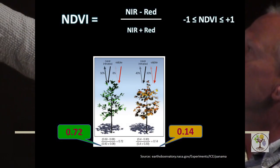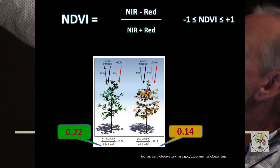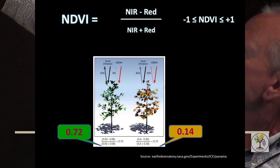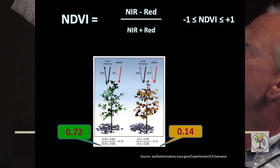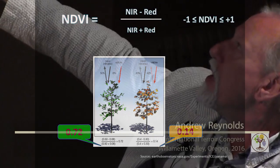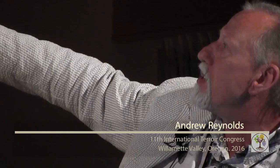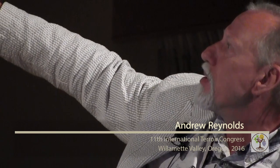As an example: here we've got a healthy tree — it's going to be absorbing a lot of red — so the NDVI is going to be say 0.7 or 0.8. And here we've got a stressed tree that's reflecting a lot of red, so the NDVI is going to be quite low.